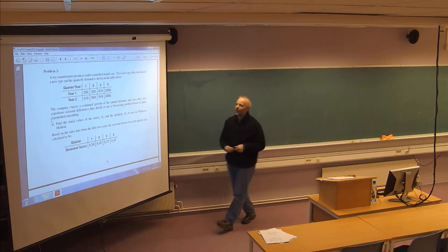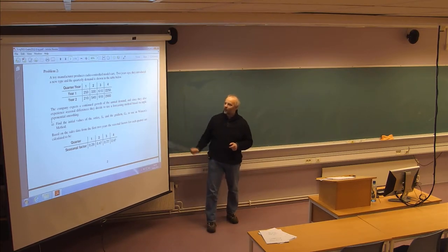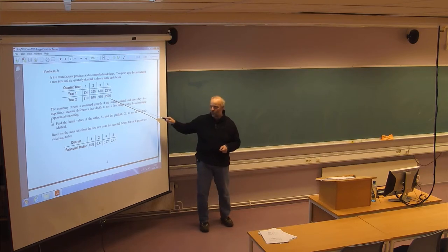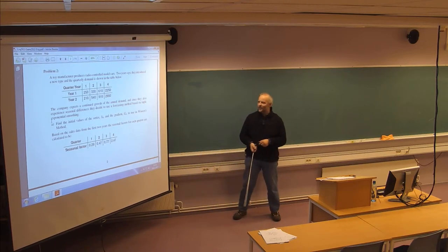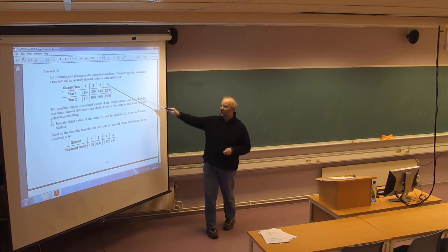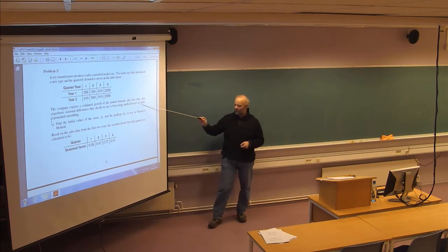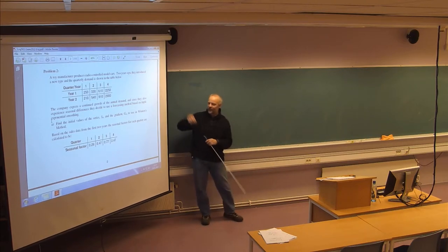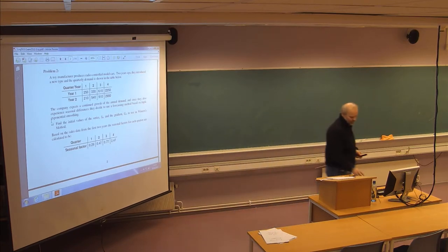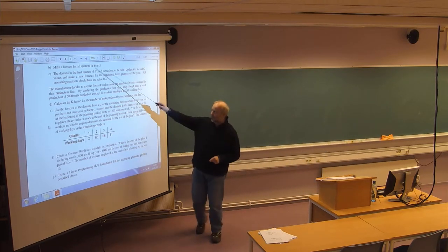Problem two is a forecasting problem about a toy manufacturer producing radio-controlled model cars. They introduced this type to the market and have sales data for two years. We can easily see this is probably a typical Christmas present because sales are very high in the last quarter. You are asked about forecasting using triple exponential smoothing, with the first three sub-problems regarding this forecasting.